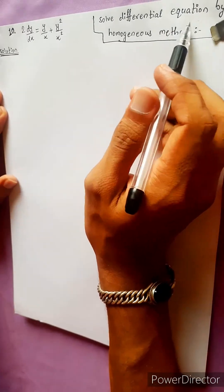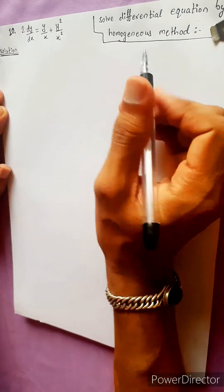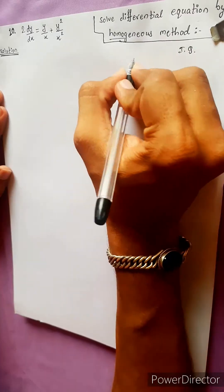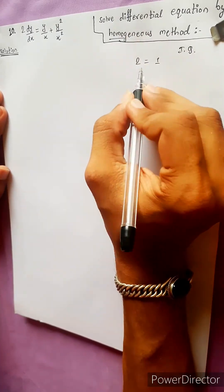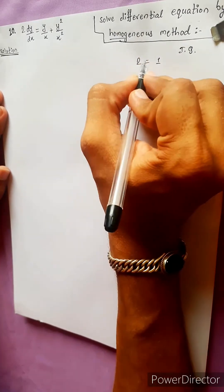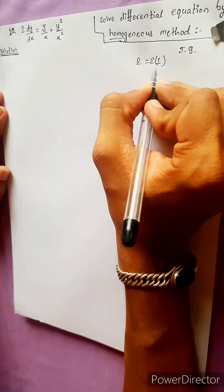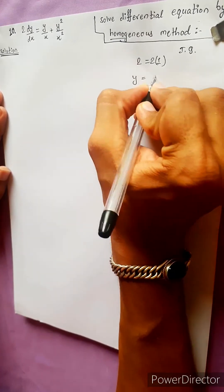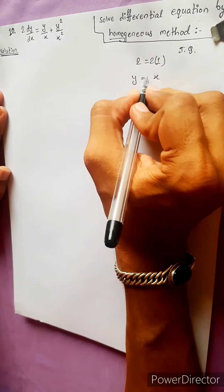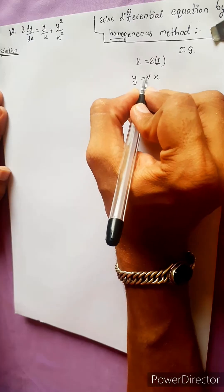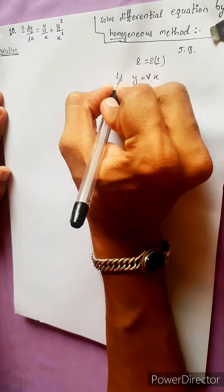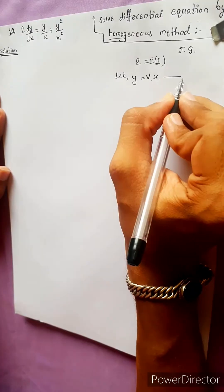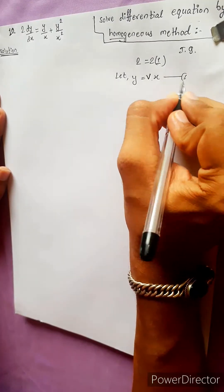Solve a differential equation by the homogeneous method. For the special condition, y equals x times a constant. We use the substitution y equals px.